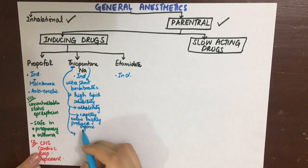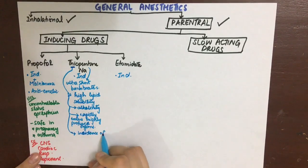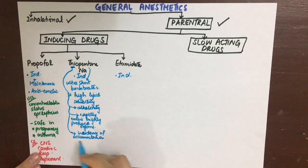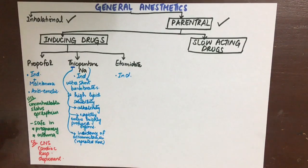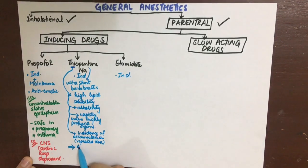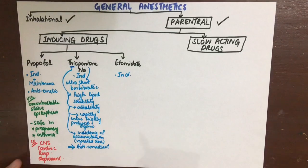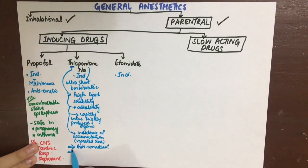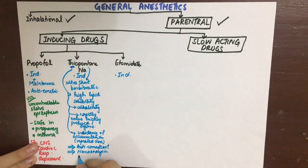That's why it can only be used for induction — it has a short duration, after which it redistributes to insensitive organs such as fat tissues or skeletal muscles. There is a high incidence of accumulation on repeated doses, and it also has anticonvulsant properties.